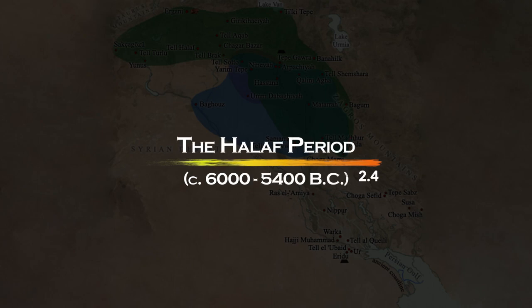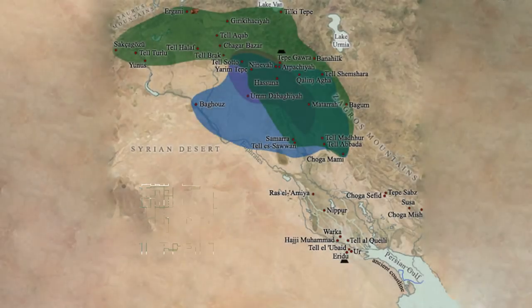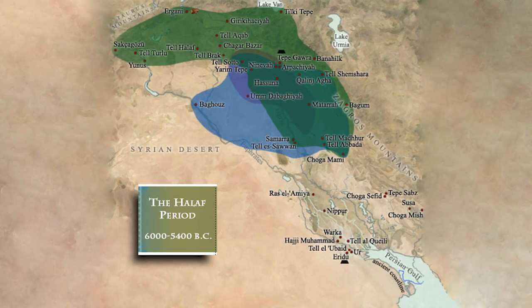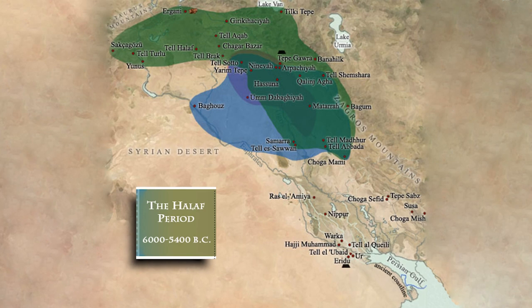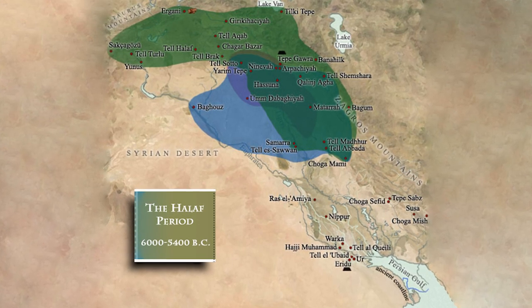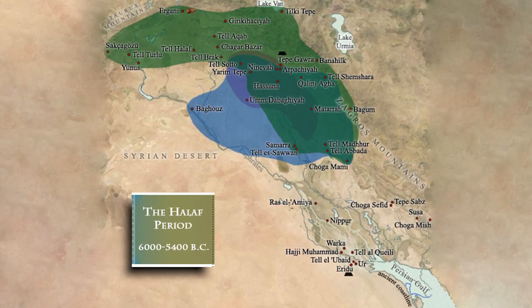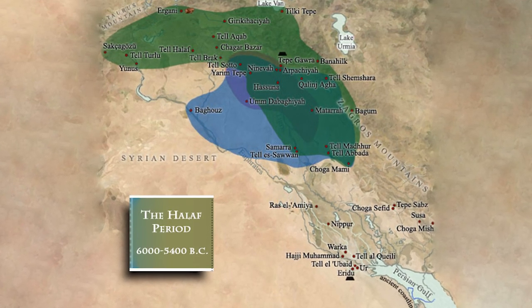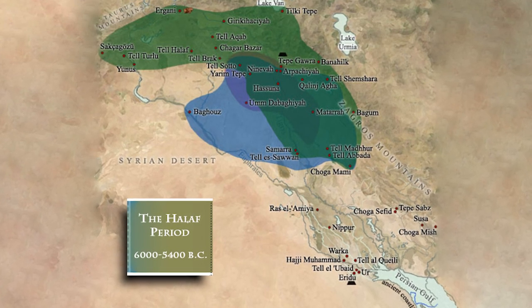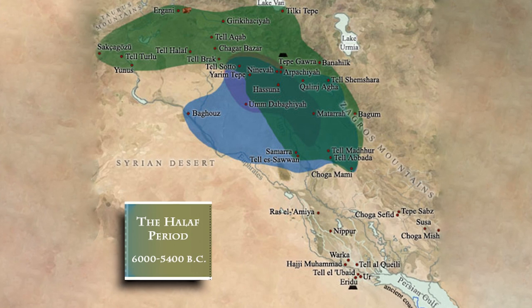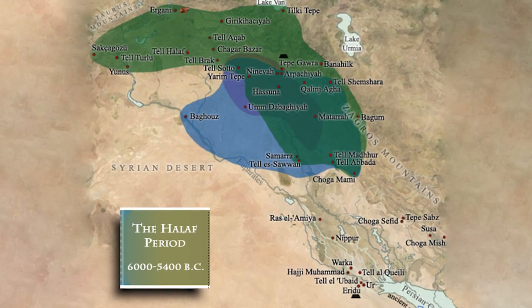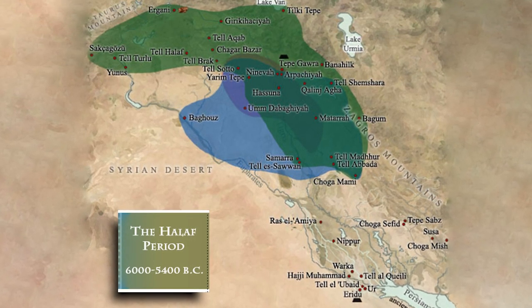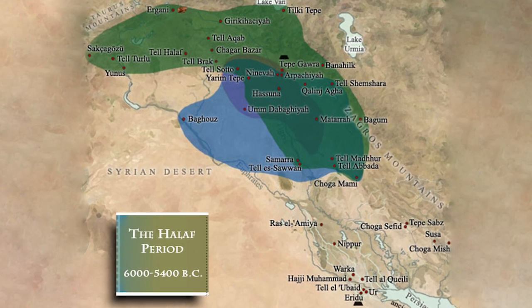The Halaf Period. During the mid-6th millennium BC, a new farming culture emerged in northern Mesopotamia, known as the Halaf culture. The name Halaf derives from the archaeological site of Tel Halaf, located in the Khabar Valley in northeastern Syria, where this culture was first identified. The Halaf culture was primarily centered in northern Mesopotamia, spanning between Lake Van and Samara. Distinct from earlier cultures in northern Mesopotamia, the Halaf culture may indicate the arrival of new settlers from outside the region.